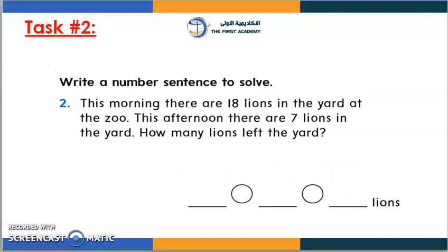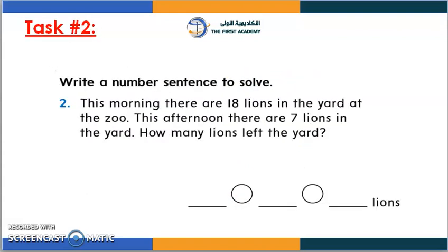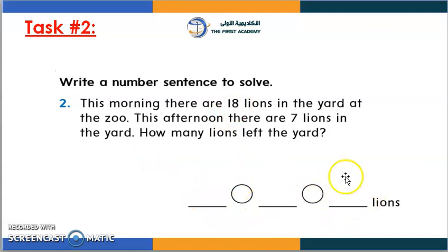Let's move to task 2. In the second task, I want you to write a number sentence to solve — same as task 1. Let's read the question together. This morning, there were 18 lions in the yard at the zoo. This afternoon, there were 7 lions in the yard. How many lions left the yard? So we're going to write 18 first, minus 7, equals the unknown.